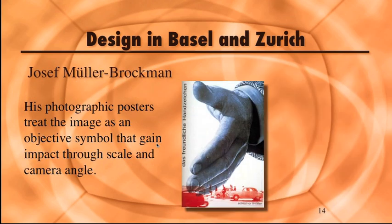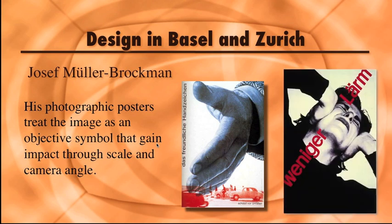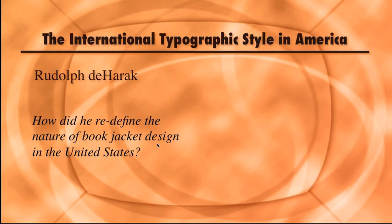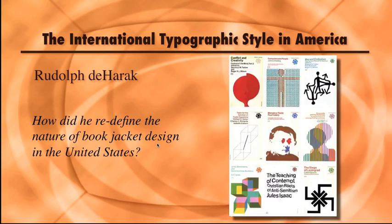Müller-Brockmann's photographic posters treat the image as an objective symbol that gains impact through scale and camera angle. In the poster for the Swiss Auto Club, photography amplifies the text—the friendly hand sign protects from accidents. In another public awareness poster, the type reads 'less noise' while the photograph shows the discomfort of noise. During the 1960s, he created a series of over 350 book covers for McGraw-Hill publishers. Tell me how he redefined the nature of book jacket design in the United States through his designs for McGraw-Hill publishers.